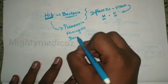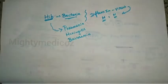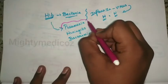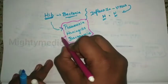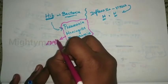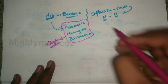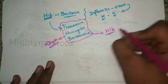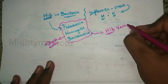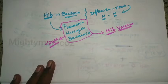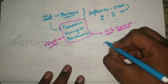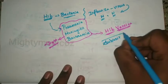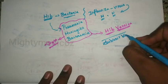Haemophilus influenzae B also causes bacteremia. These are serious infections caused by this organism, mostly in children less than 2 years of age. The Haemophilus Influenzae B vaccine — what type of vaccine is it? It is a subunit vaccine.